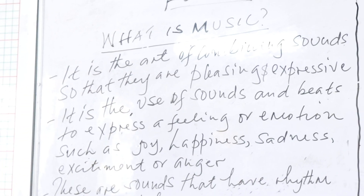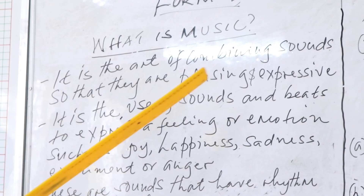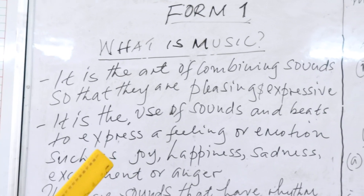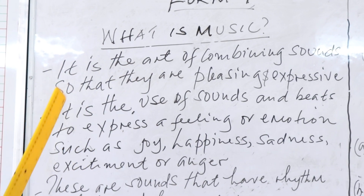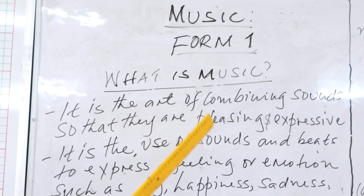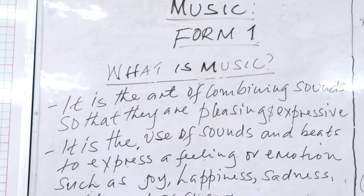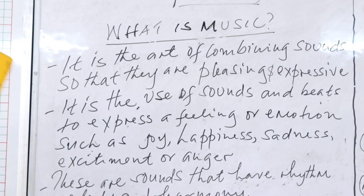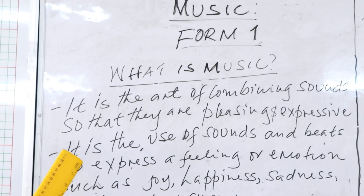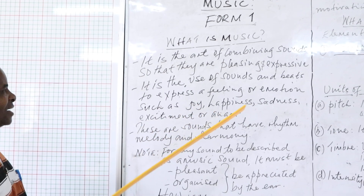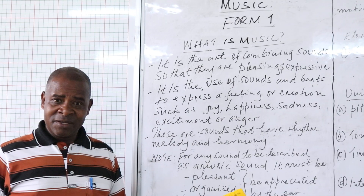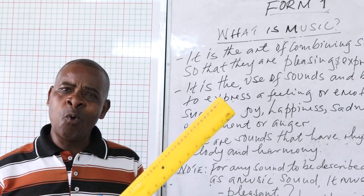What is music? We define music first as the act of combining sounds so that they are pleasing and expressive. Another definition is that it is the use of sounds and beats to express a feeling or emotion such as joy, happiness, sadness, excitement, or even anger. So music is a way of expressing oneself.